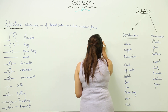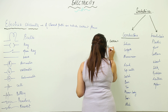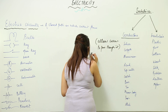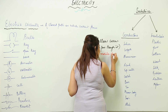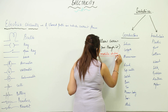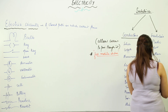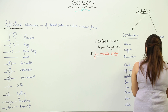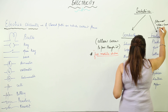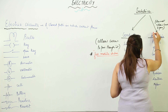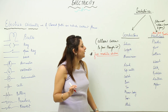Conductors are those which can actually allow current to pass through them. The reason they allow current to pass is that they have free mobile electrons — electrons which are free to move. Any material which has free mobile electrons is a good conductor of electricity. Insulators, on the other hand, do not allow current or electricity to pass because they have no free mobile electrons.